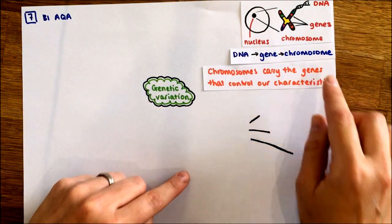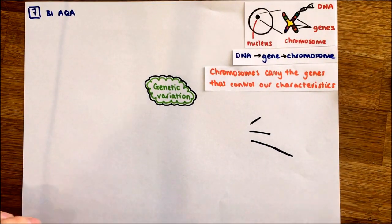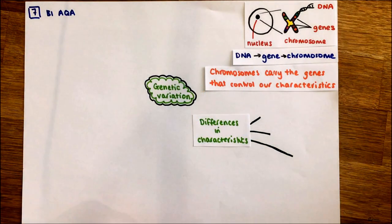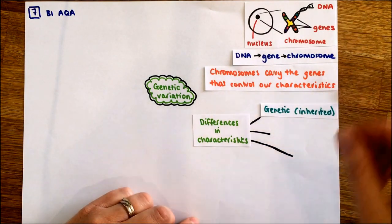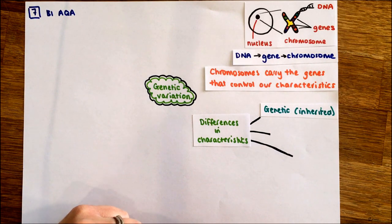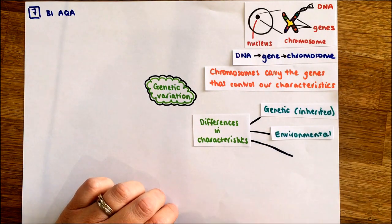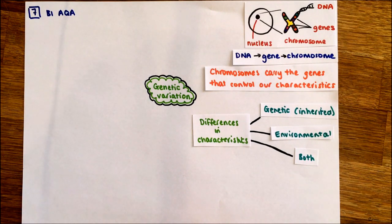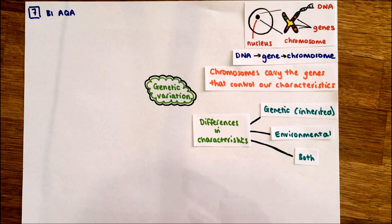Chromosomes carry the genes that control our characteristics. Differences in characteristics can be caused by genetic factors - things inherited from our parents passed down in our genes - they could be environmental, or they could be both. For example, height: we tend to inherit a potential to grow to a particular height from our parents, but we could be affected by the environment. If we don't have access to a balanced diet and lots of nutrients, we may not grow as tall as our genes would otherwise allow.